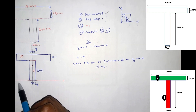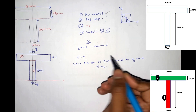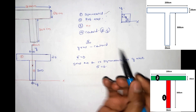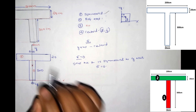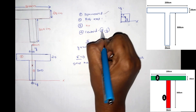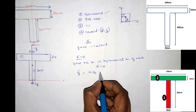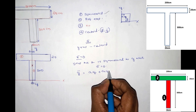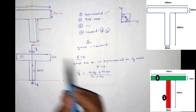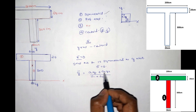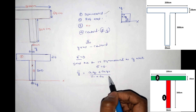We will mark x-bar separately. Now we have y-bar. The y-bar equation is: a1·y1 plus a2·y2 divided by a1 plus a2. This is the equation for two sections. If there are three sections: a1·y1 plus a2·y2 plus a3·y3 divided by a1 plus a2 plus a3.